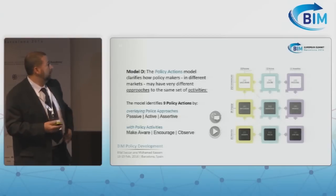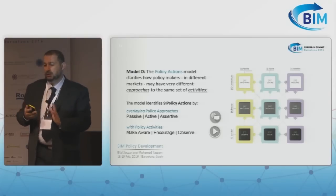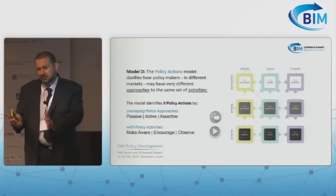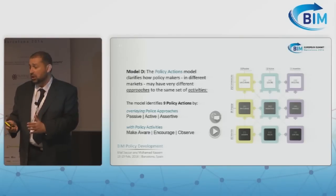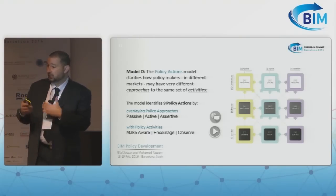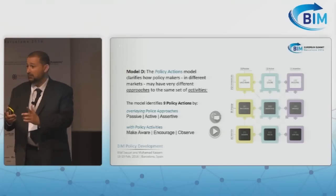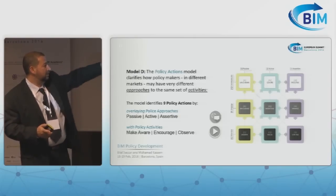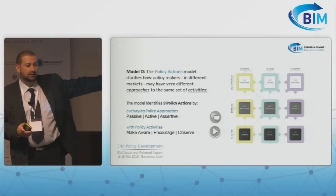The fourth model looks at policy actions taken by policy makers. Some countries prefer a passive approach — the policy maker just makes people aware of BIM and encourages them. Or it could be more active, spending money on education and incentives. Or it could be more prescriptive and assertive: you have to adopt BIM, these are the standards you need to follow. These three approaches are matched by activities — nine actions — and we can measure these and understand the differences between countries.